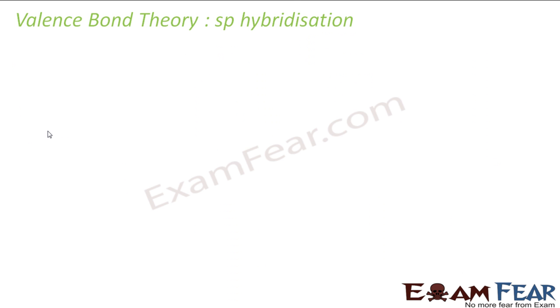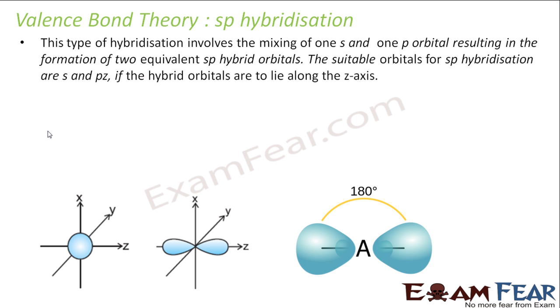So let's take sp hybridization. Let's talk about valence bond theory for sp hybridization. So in this type of hybridization it involves mixing of 1s and 1p orbital. Here you have 1s and 1p orbital, they are mixing. So how many orbitals will we get? We will get 2 sp hybrid orbitals, and they will have same shape and same energy.